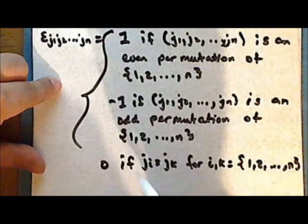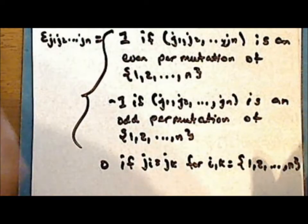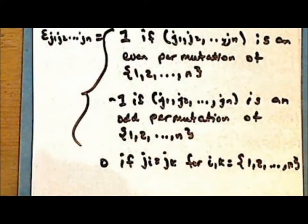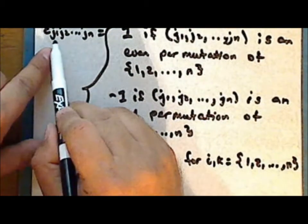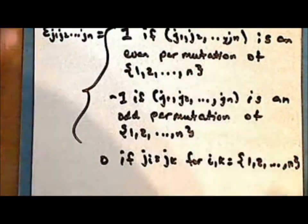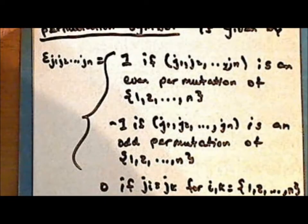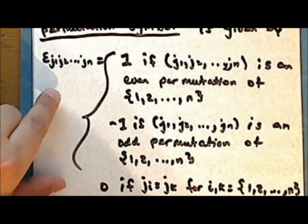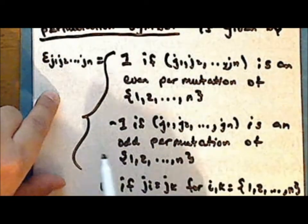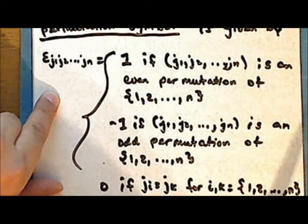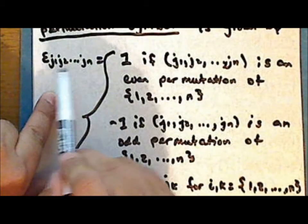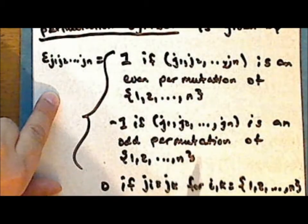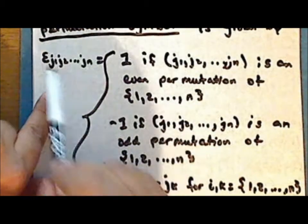So the Levi-Civita permutation symbol has three possible values: 1, negative 1, or 0. It is 1 if the indices represent an even permutation of the integers 1 through N; negative 1 if the indices represent an odd permutation of the integers 1 through N; and 0 if there is a repetition of any of the index values.